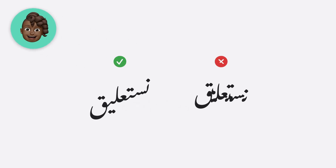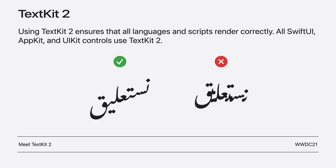Ismat notices that while most apps display Urdu text perfectly fine, every now and then she encounters an app in which text appears so broken that it's illegible. Here's the word 'nastalik', the name of the Urdu script, rendered correctly on the left and incorrectly on the right. The solution here is simple: use TextKit 2, our next generation text engine that ensures all scripts render correctly. And the good news is that when you use a label or text view in SwiftUI, AppKit, or UIKit, you're already using it.